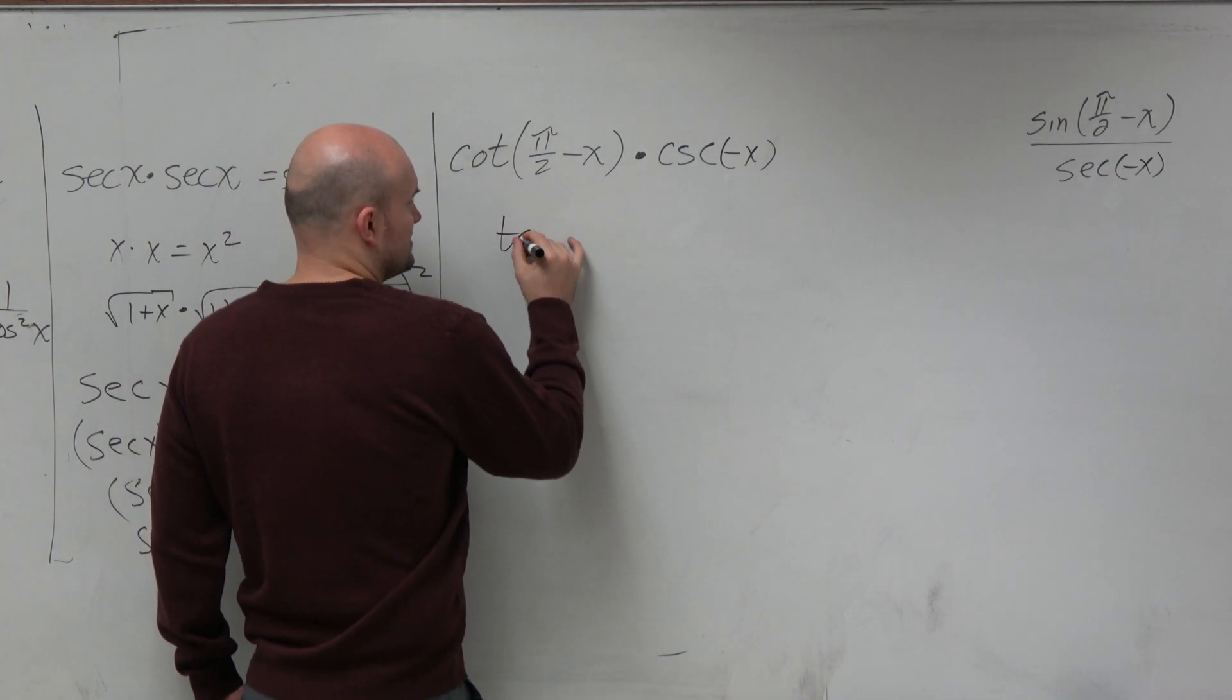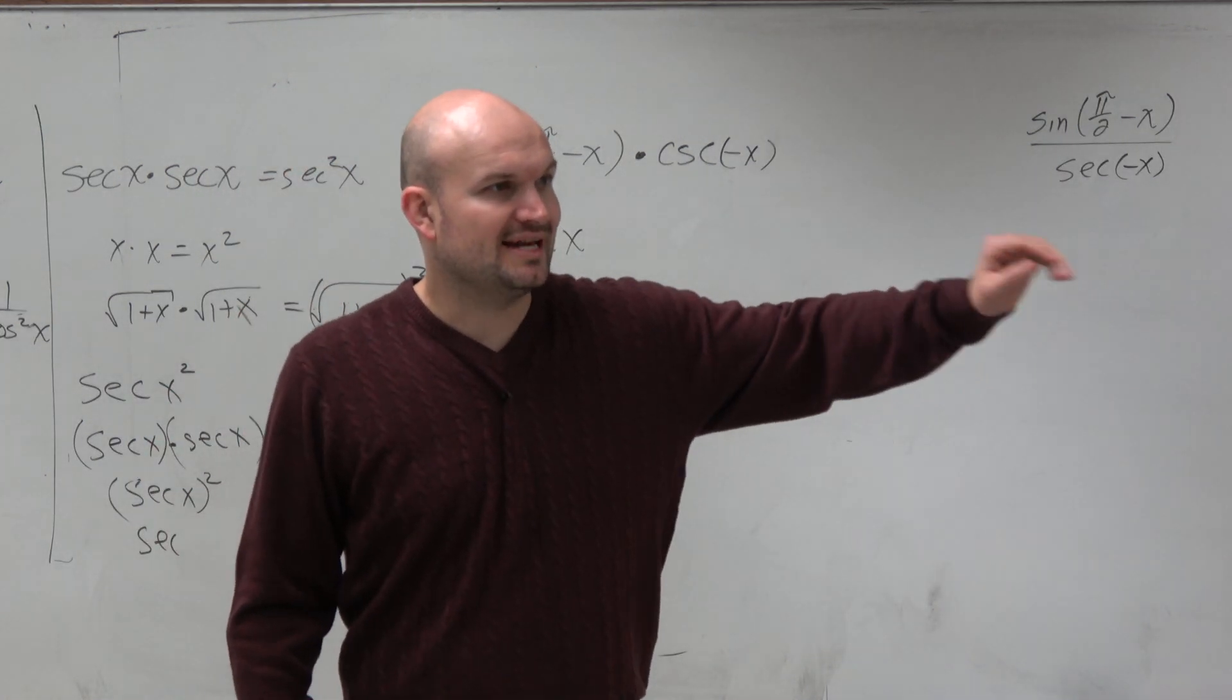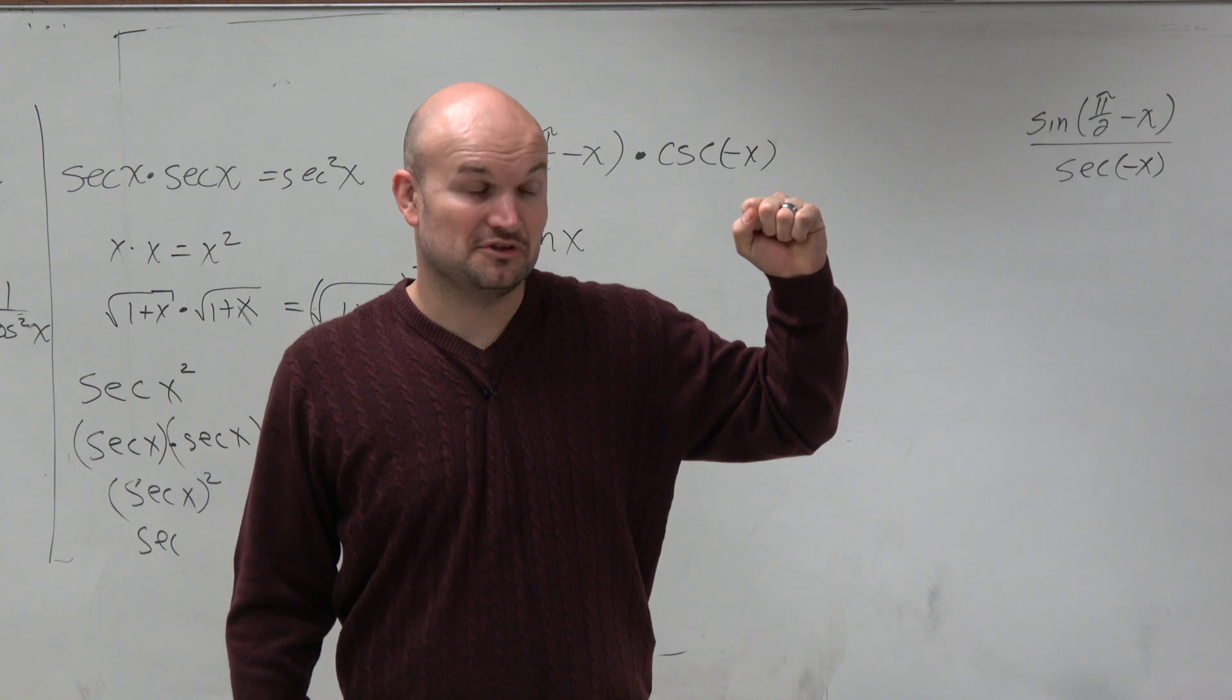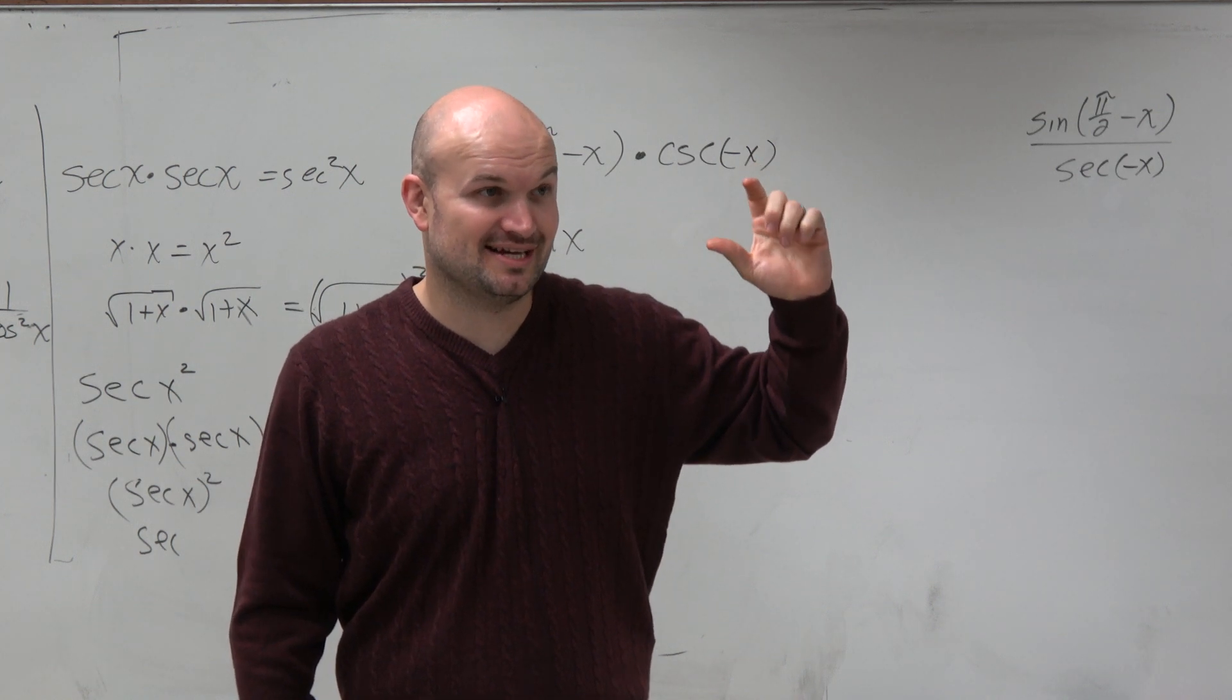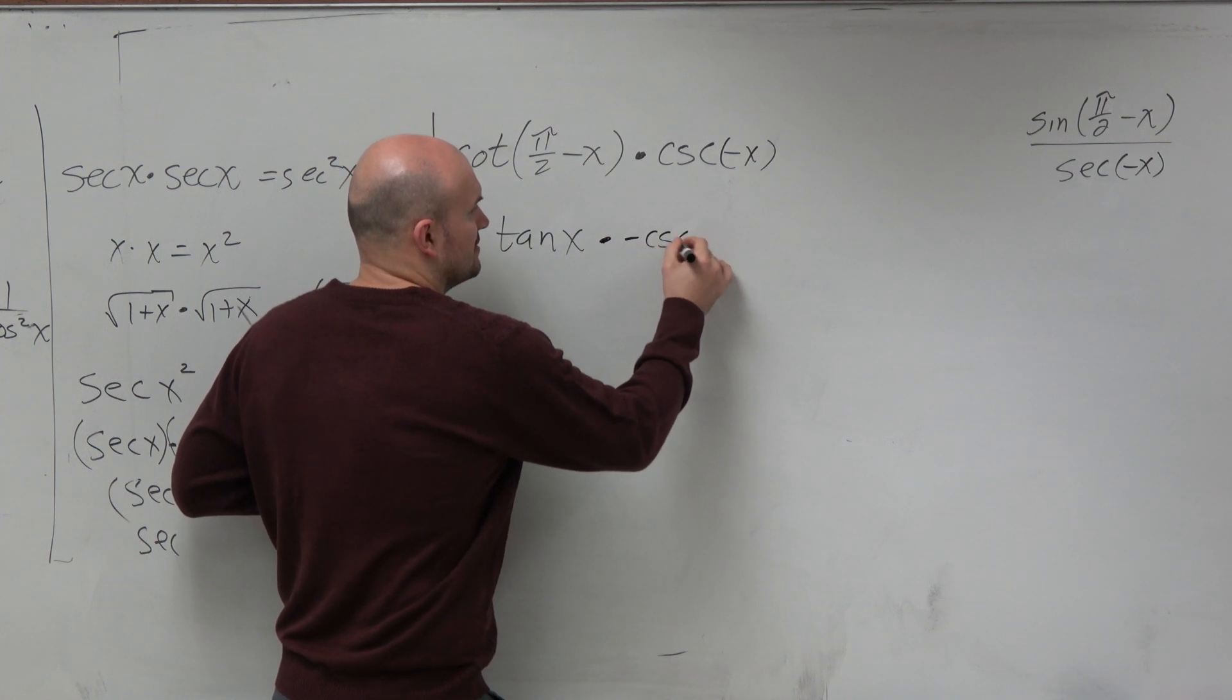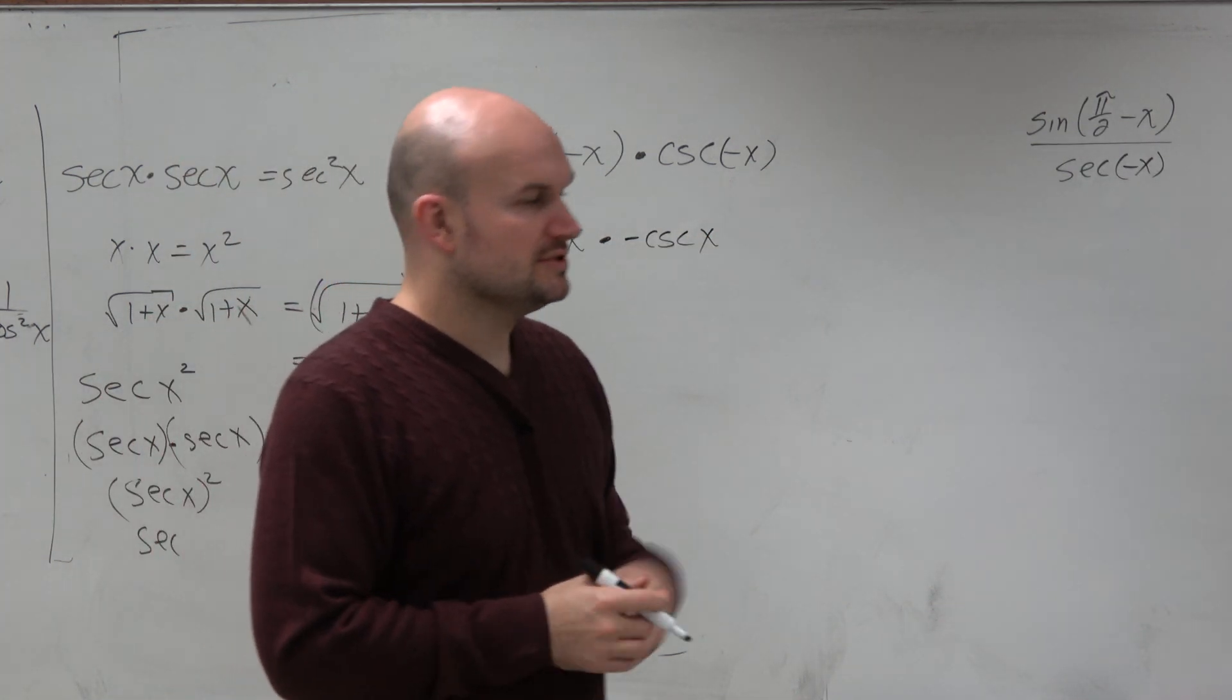This is the same thing as tangent of x. The cosecant—is that odd or even? The only even functions are cosine and secant. So this is odd. So that means this can be rewritten as negative cosecant of x. So we got to that part.